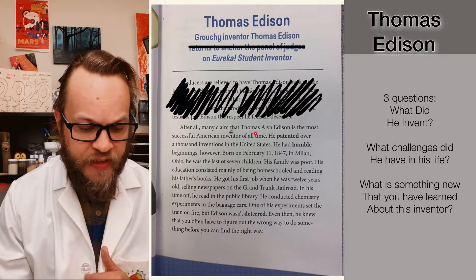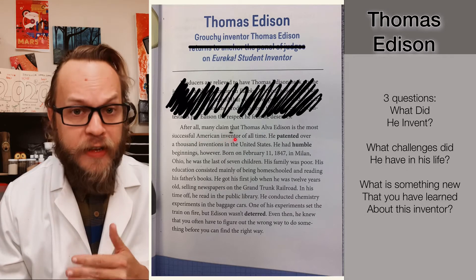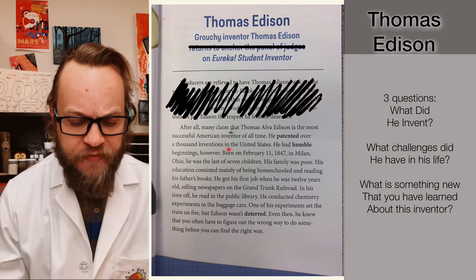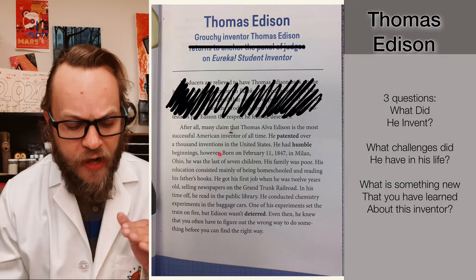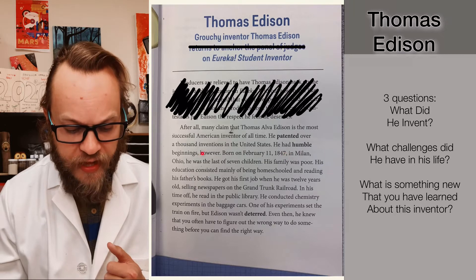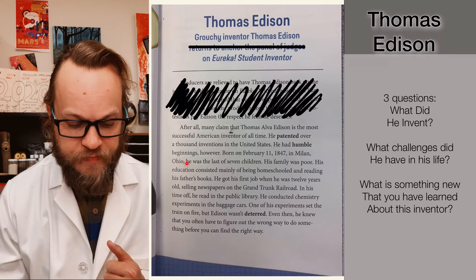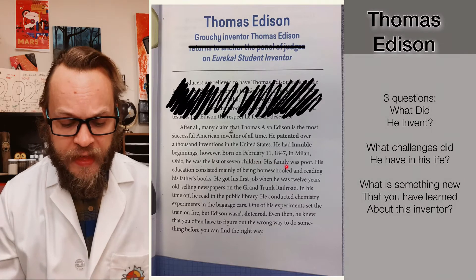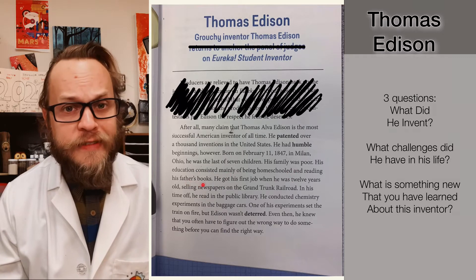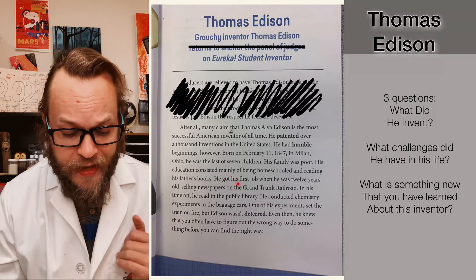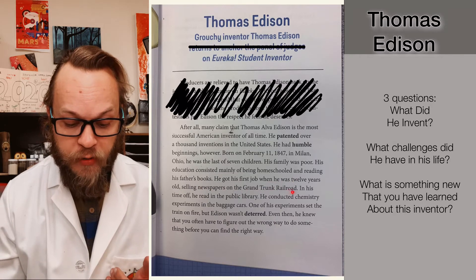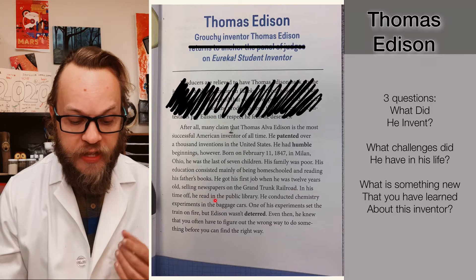Thomas Alva Edison is the most successful American of all time, many people consider. He patented over a thousand inventions in the United States. He had humble beginnings, however — born on February 11, 1847 in Milan, Ohio. He was the last of seven children. His family was poor, and his education consisted mainly of being homeschooled and reading his father's books. He got his first job when he was 12 years old, selling newspapers on the Grand Trunk Railroad. In his time off, he read in the public library.